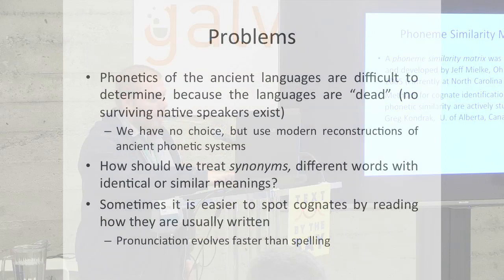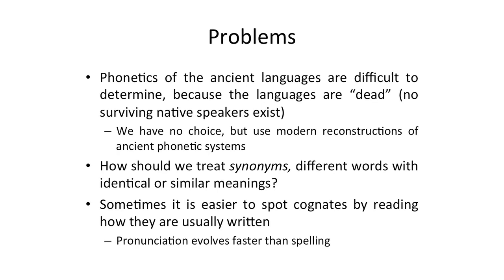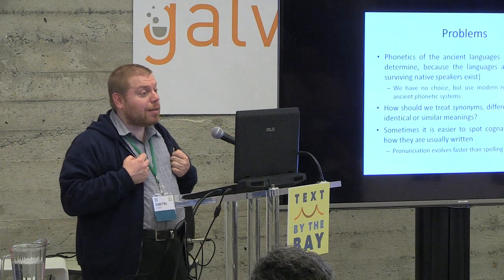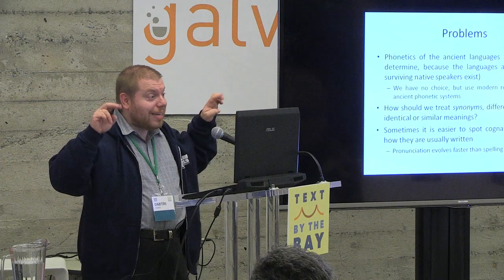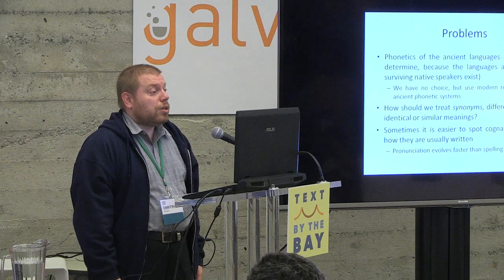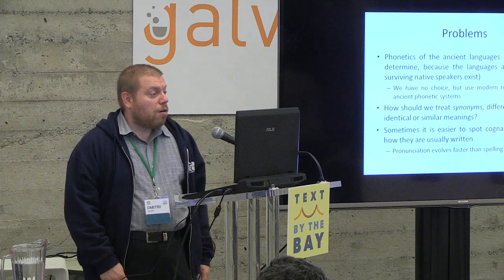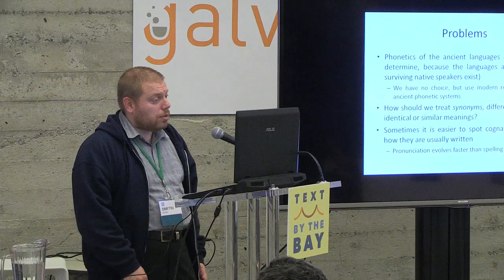This is a next step to extend the approach with Levenshtein distances. Greg Kondrak from the University of Alberta published papers on cognate identification using such phonetic similarity. However, there are interesting problems with phonetics of ancient languages such as ancient Egyptian, ancient Hebrew, Sanskrit, or even Latin — they may be difficult to determine exactly because the languages are dead. We have no surviving native speakers of Middle Egyptian, Latin, or ancient Greek, so we end up using modern reconstructions of ancient phonetic systems, and we recognize the danger but really have no choice.